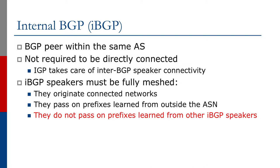The third difference is that IBGP speakers must form a full mesh, which means that every IBGP speaker peers with every other IBGP speaker in your AS. The reason for this full mesh is because IBGP speakers don't forward prefixes received by IBGP to other IBGP neighbours — there's no flooding of IBGP information. This might sound inefficient, but actually it works well, and if you have a very large network you can simplify the full mesh by using route reflectors, which we'll talk about later.